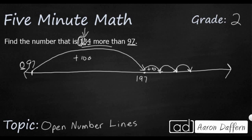So 197 plus 10 — thinking of this as 19, what's 1 more than 19? It's going to be 20. So 197 plus 10 is 207. Add another 10: 217, because 10 more than 20 is 21. And add another 10: I've got 227. Now I'm almost there. What I have left are 4 little tiny hops — 1, 2, 3, 4.